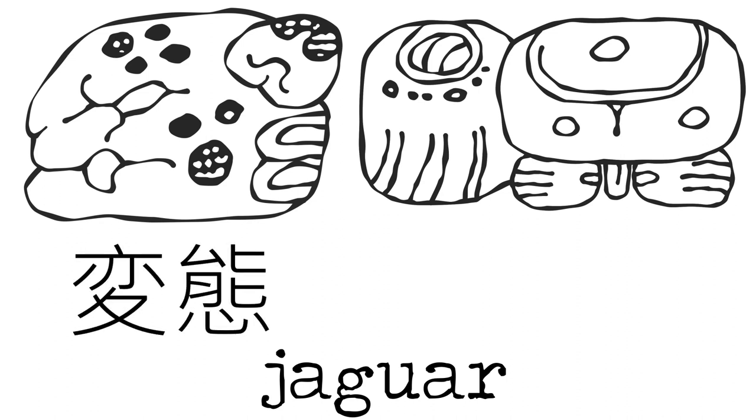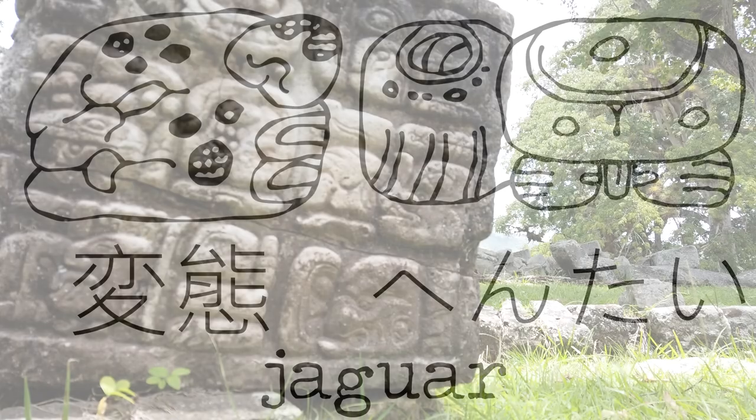So the hieroglyph on the left is similar to kanji in Japanese, while the one on the right is similar to the writing method of hiragana. Okay, let's go back to the real world.